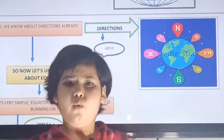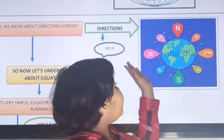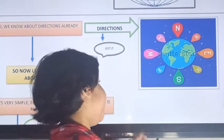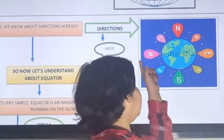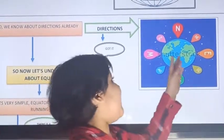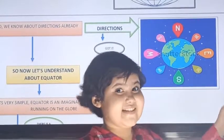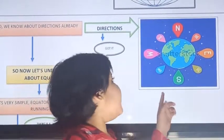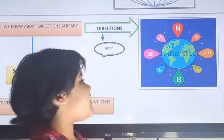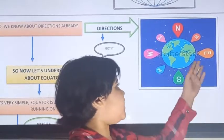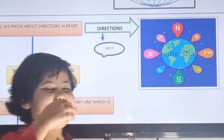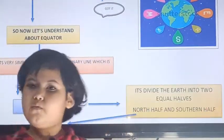The direction between north and west is northwest. The direction between north and east is northeast. The direction between south and west is southwest. And the direction between south and east is southeast.